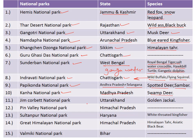Next is Jim Corbett National Park in the state of Uttarakhand, famous for the golden jackal. Pinoli National Park is in the state of Himachal Pradesh. Sultanpur National Park is situated in the state of Haryana and is famous for the white-throated kingfisher.